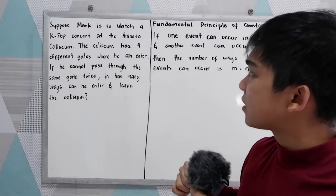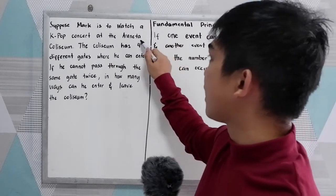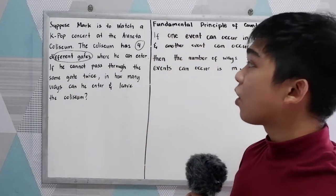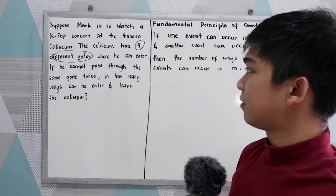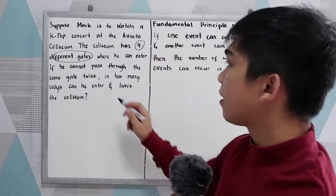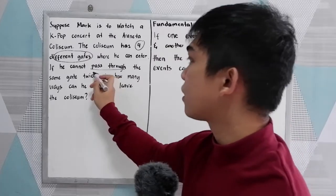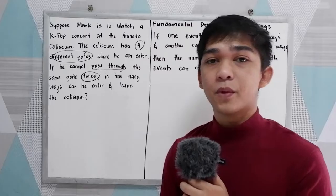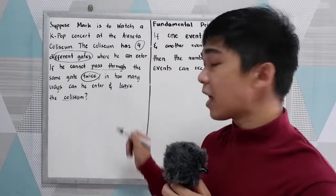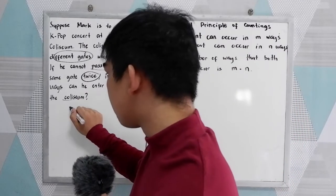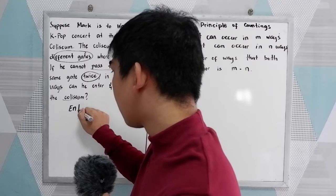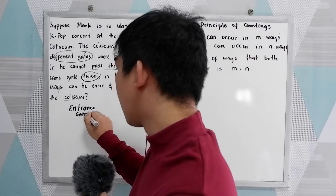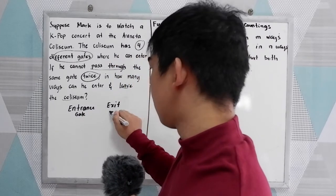So our condition is we have four different gates, and he cannot pass through the same gate twice. In how many ways can he enter and leave the Coliseum? So enter and leave — that means we need to have our entrance gate and our exit gate.